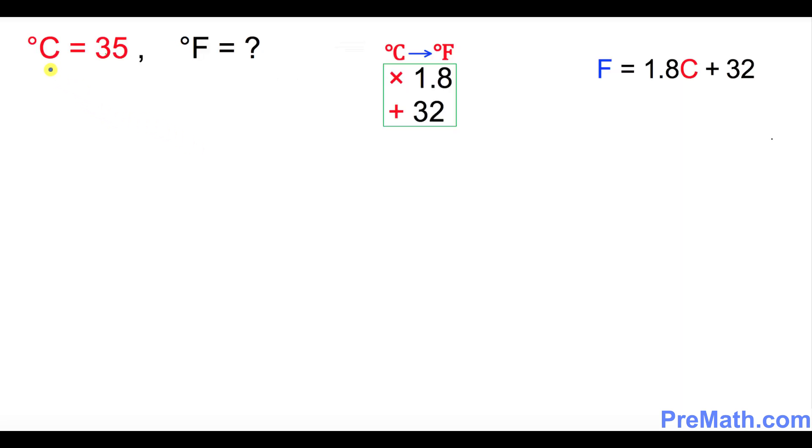So in this very first problem as you can see, C equals 35 degrees Celsius and we want to find Fahrenheit F. We'll be using this formula over here. If we are going from C to F, you can use this formula or this one, same thing, but I will recommend you to do this one right up here.